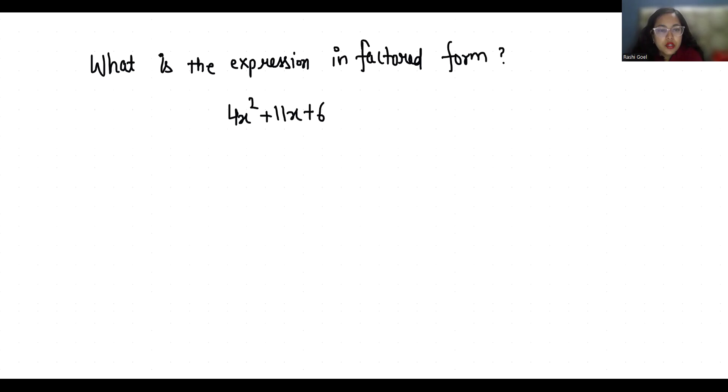So 4x square plus 11x plus 6. We have to break this middle term with the help of the first and the last term. So the coefficient of first term is 4 and the coefficient of last term is 6. So we will multiply it.